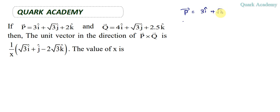3i cap plus root 3 j cap plus 2k cap. And Q vector which is equal to 4i cap plus root 3 j cap plus 2.5k cap. Now let's figure out P cross Q.